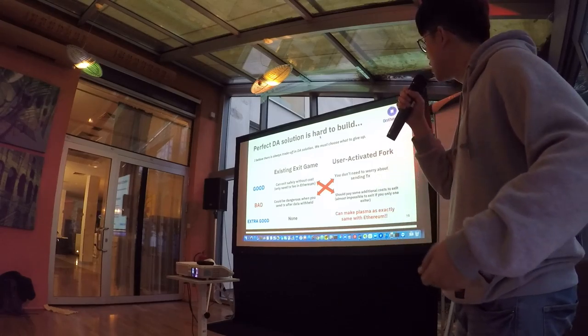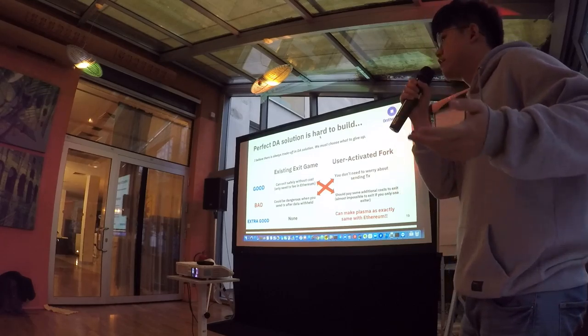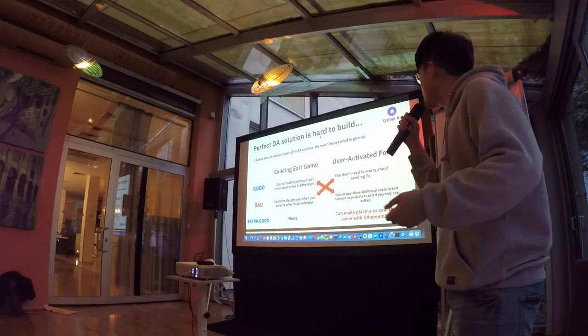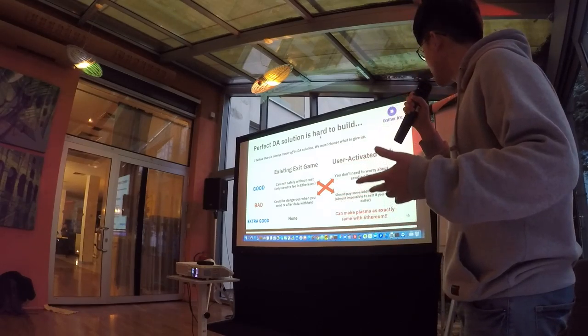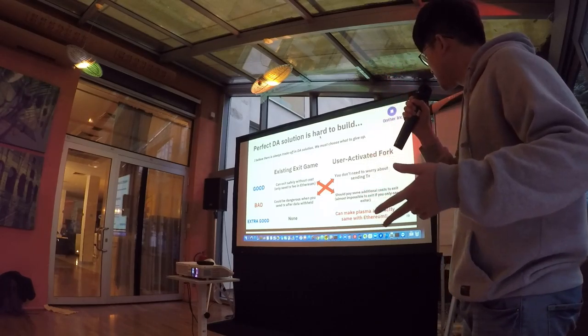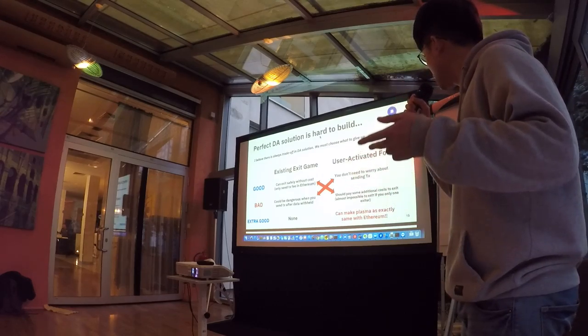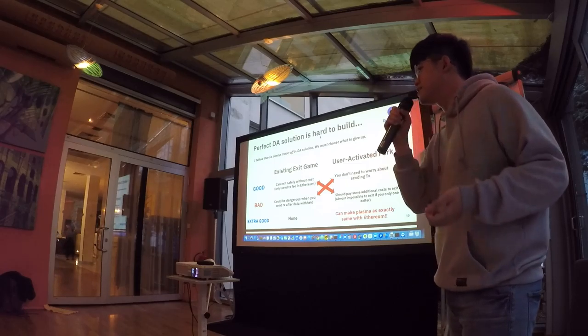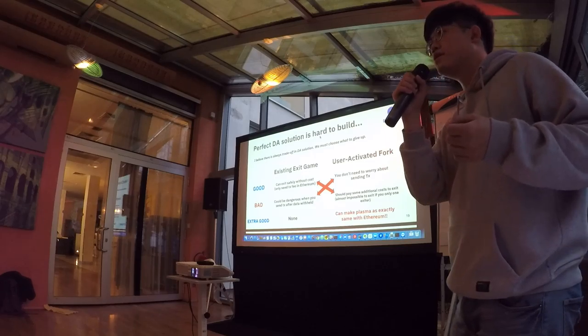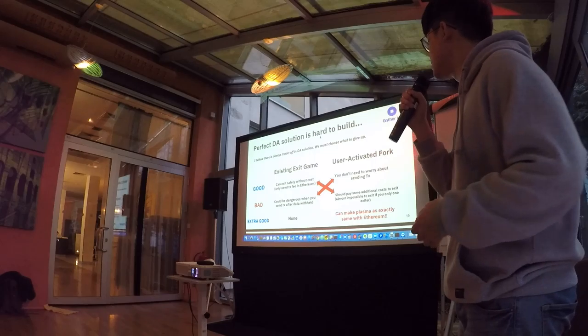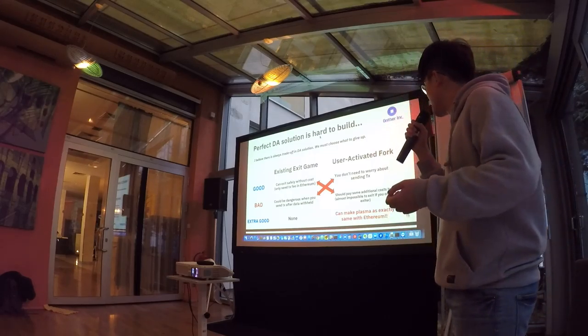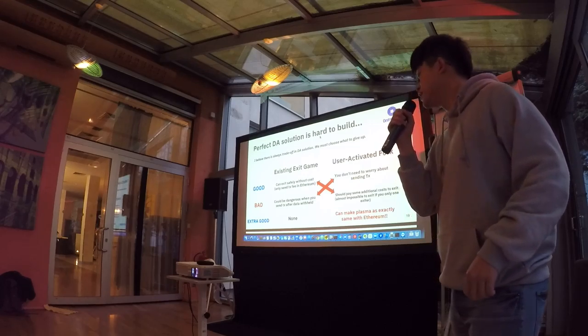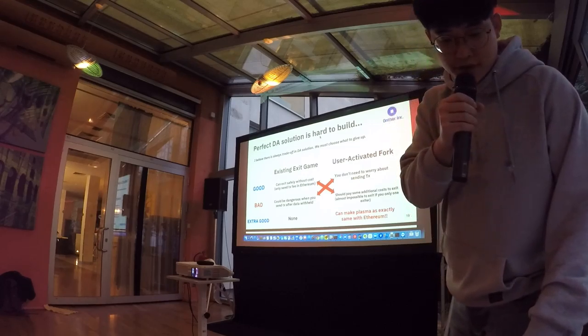In existing exit game, the good thing is users can access safely without cost. He only need transaction fee in Ethereum, but the bad thing is it could be dangerous when users send a transaction after the data withheld because the priority matters. In user activity fork, the good thing is that you don't need to worry about sending transaction after the data withhold, but the bad thing is users should pay some additional transaction cost, not the transaction cost, additional cost to exit. It could be almost impossible to exit if you are the only one user or only one accident. But the extra good thing is we can make plasma exactly same with Ethereum with general computation and general states. Thank you for listening.